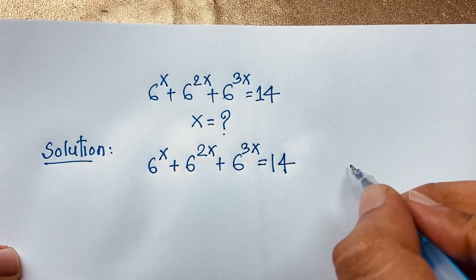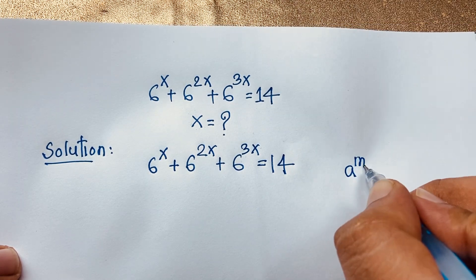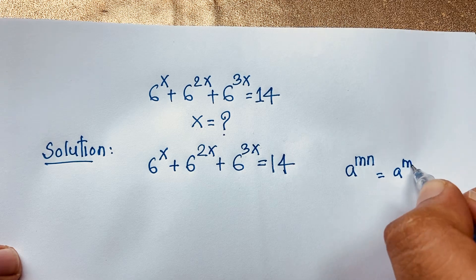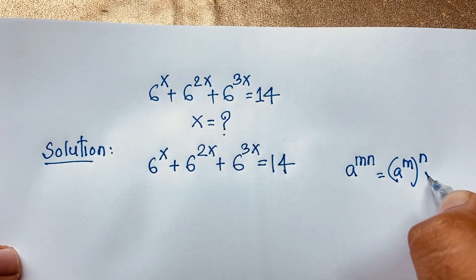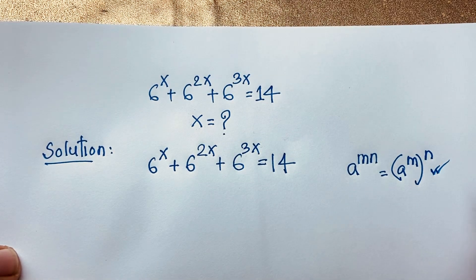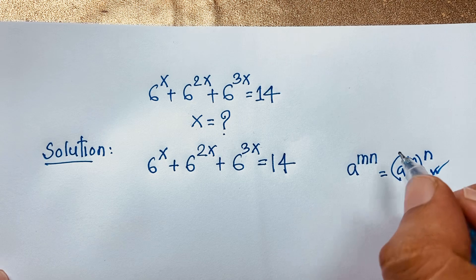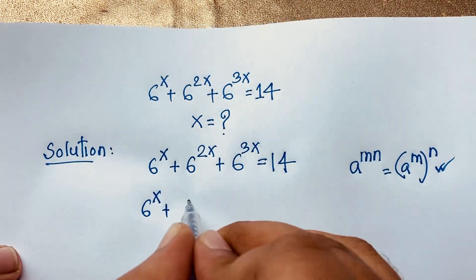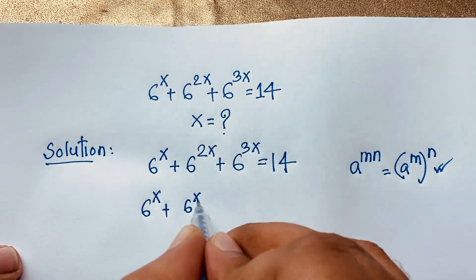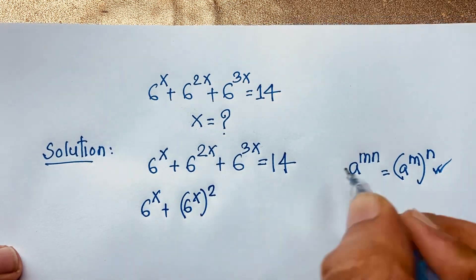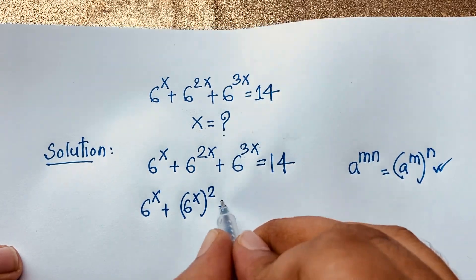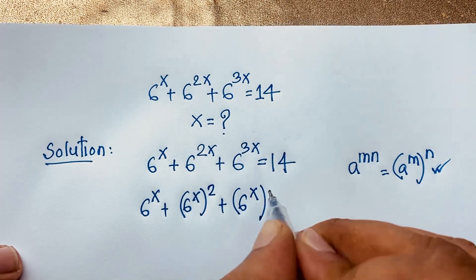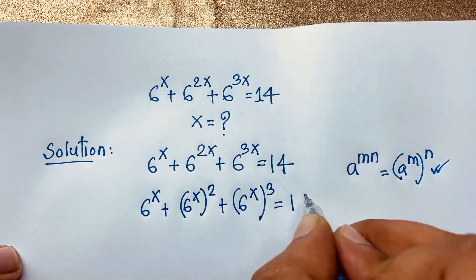Now, we know that a to the power m·n equals a to the power m, whole to the power n. According to this exponent law, I consider this expression: it will be 6 to the power x, plus 6 to the power x whole to the power 2, plus 6 to the power x whole to the power 3, is equal to 14.